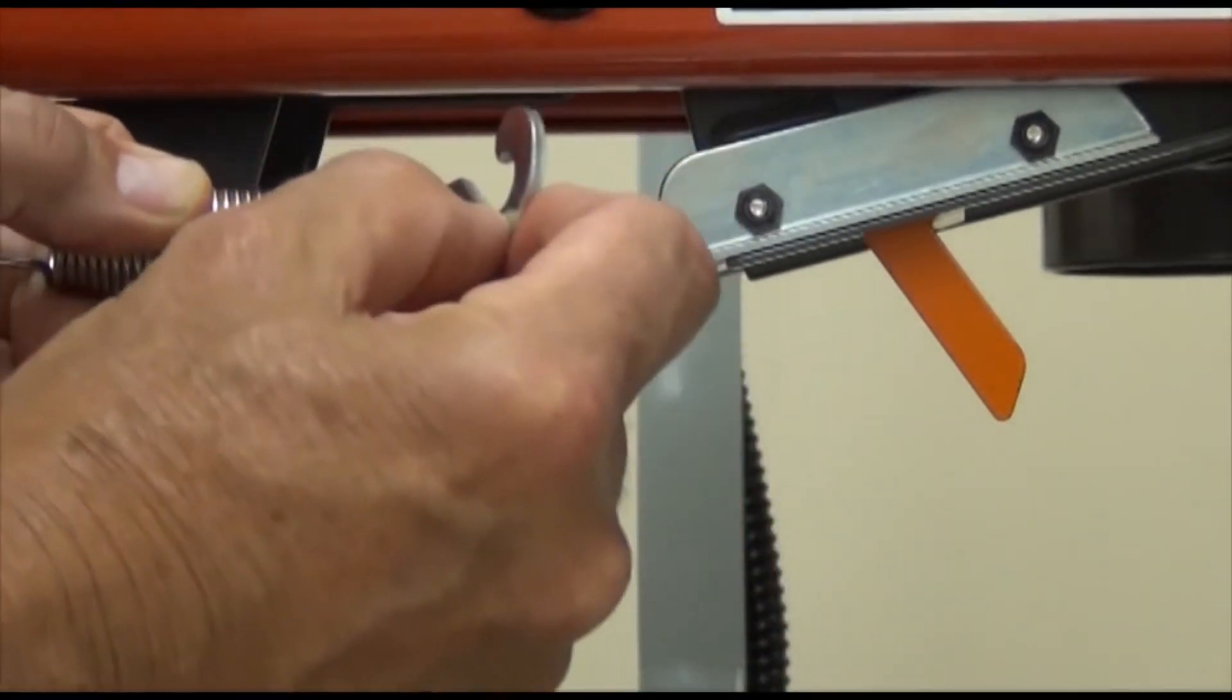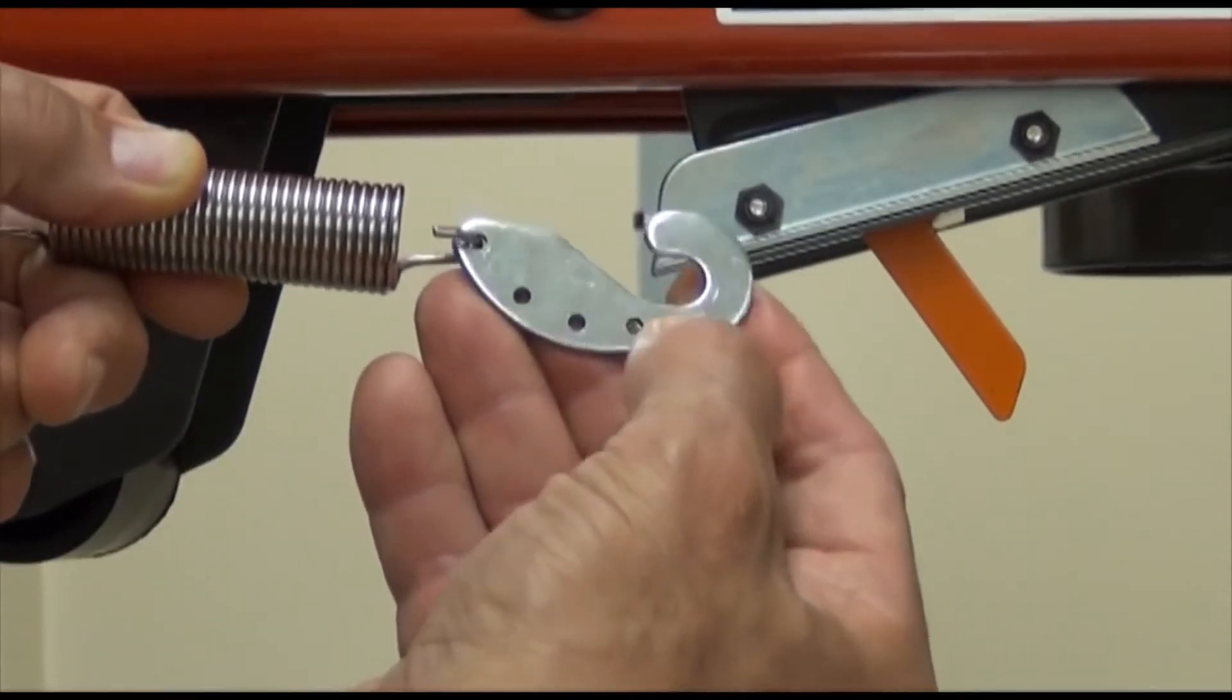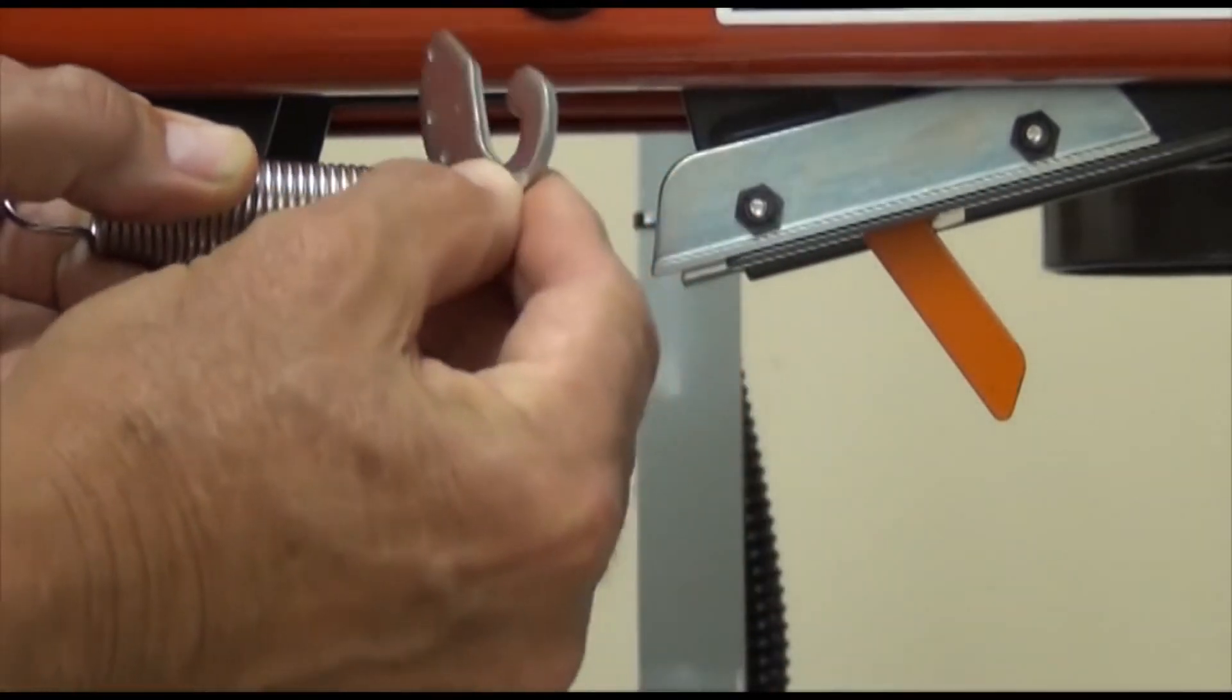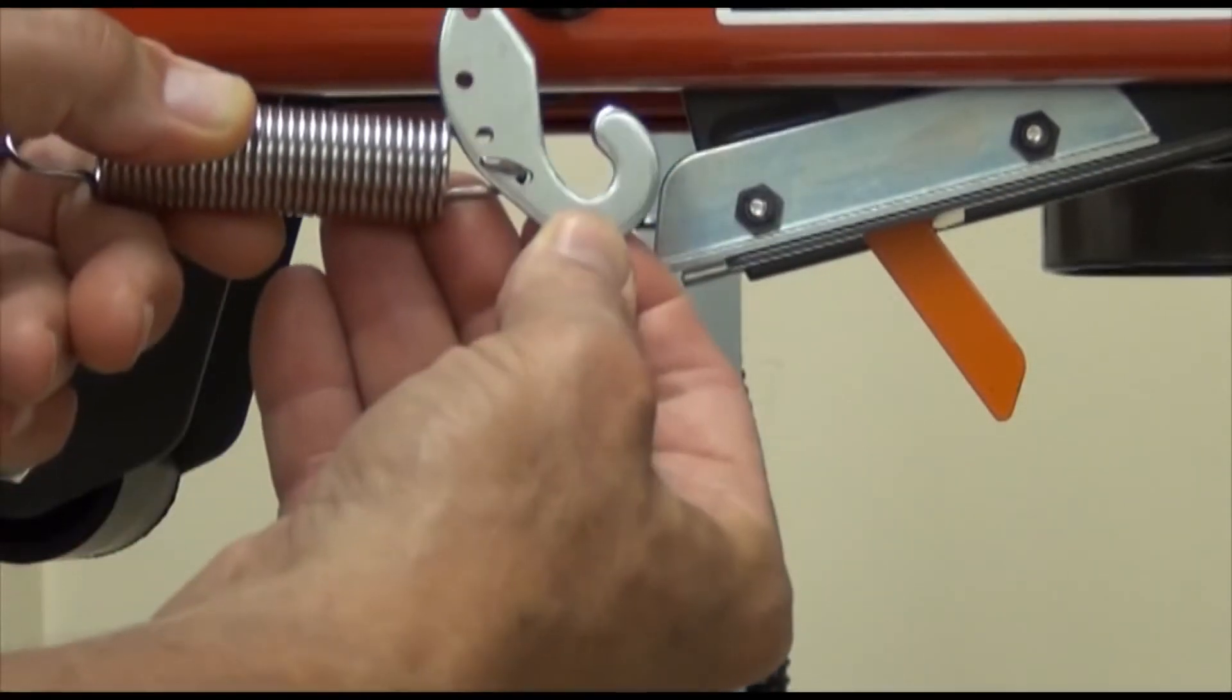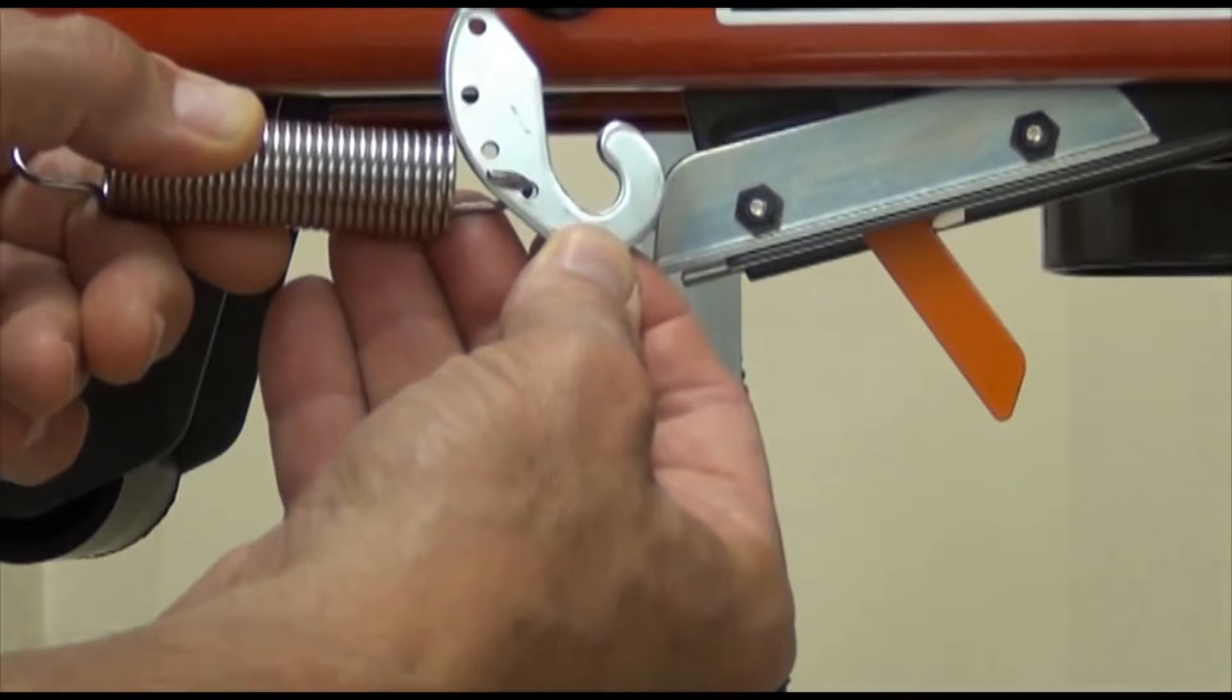To decrease the spring tension, place the spring end loop in a hole farther from the hook end of the spring holder. To increase the spring tension, move the spring loop closer to the hook end of the spring holder.